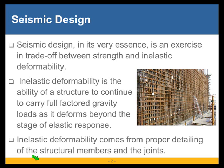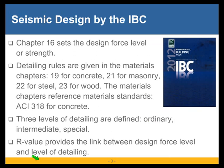Inelastic deformability comes from proper detailing of the structural members and the joints — this is very, very important. So if we want to design for a low strength level, we would need to do fancy detailing which will equip our structures with a high degree of inelastic deformability. In our codes, which are now all based on one or another edition of the IBC, chapter 16 sets the strength level for which we design our structure. Detailing rules are given in the materials chapters: 19 for concrete, 21 for masonry, 22 for steel, and 23 for wood.